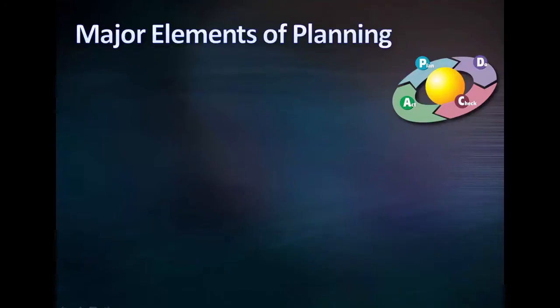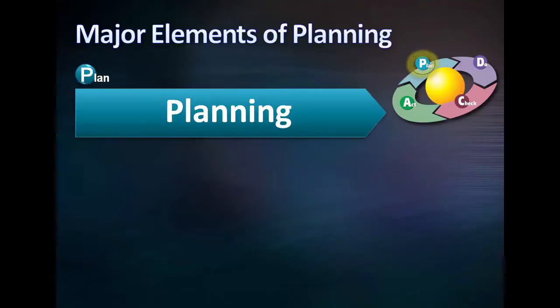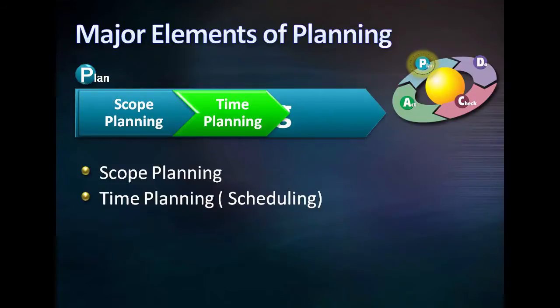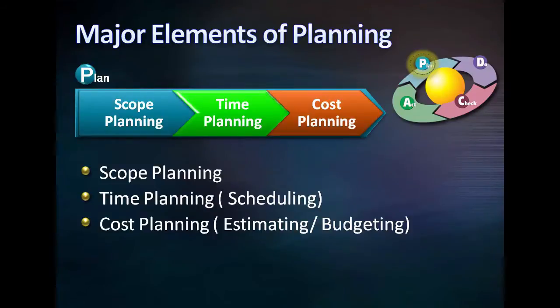Scope planning is part of the planning stage in the PDCA cycle. The planning stage is composed of three modules: scope planning, time planning, and cost planning.